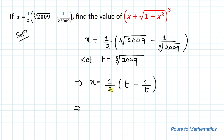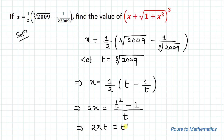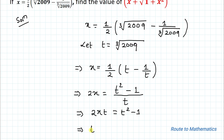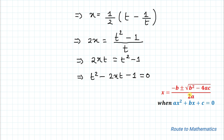If I take 1/2 to the left-hand side, it gets multiplied with x, so we have 2x equals — taking LCM t — (t² minus 1) divided by t. Taking t to the other side gives us 2xt equals t² minus 1. Now we can write t² minus 2xt minus 1 equals 0.